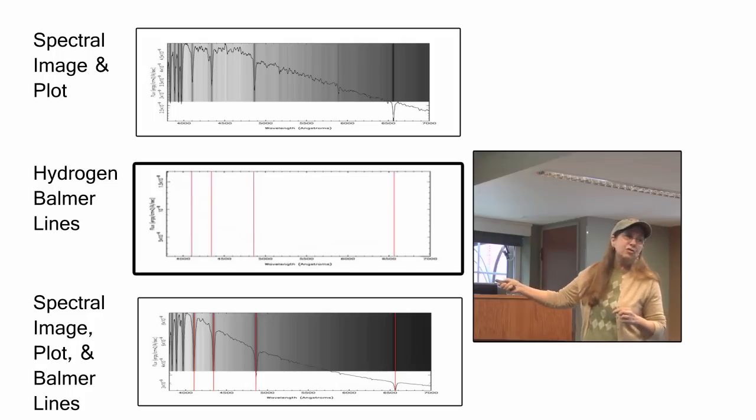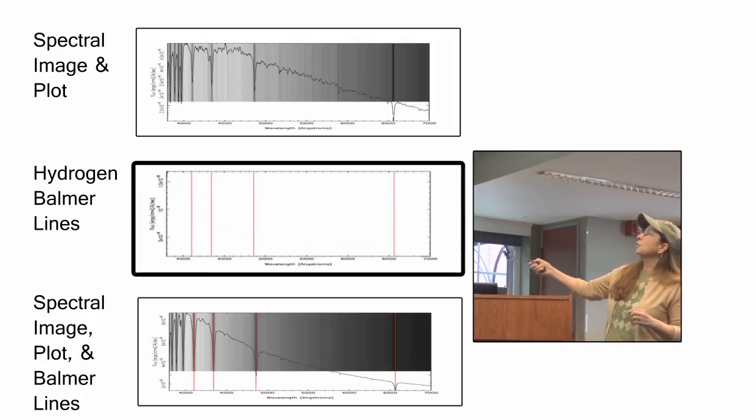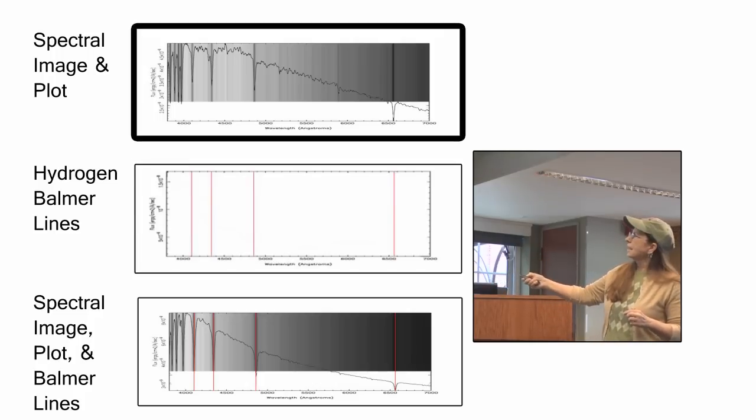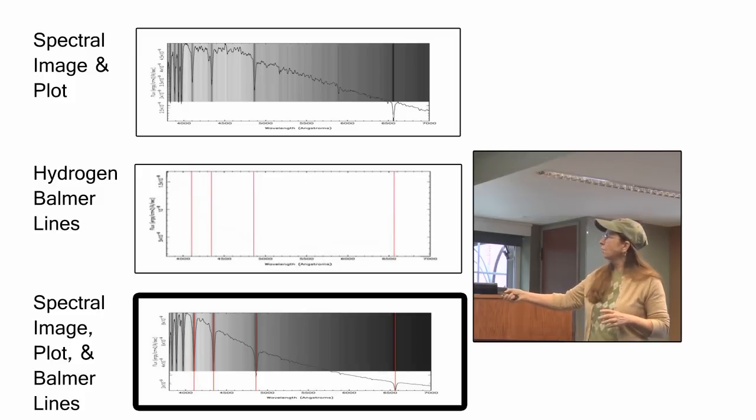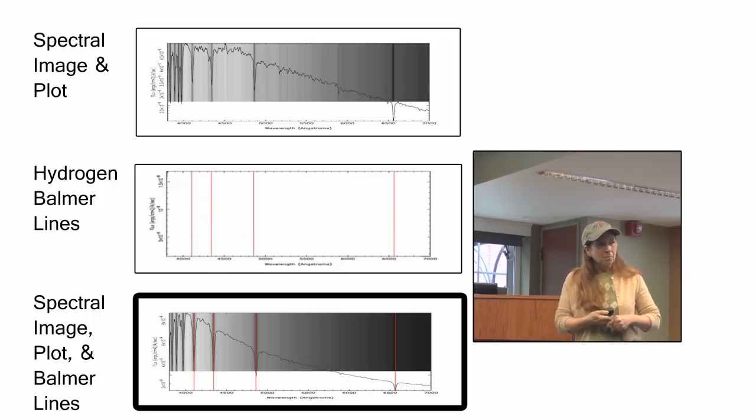Then you look at the hydrogen Balmer lines, take your spectral image and plot, and overlay the Balmer lines on it. You can see that this particular one has all four Balmer lines, and so that tells you the classification of star that is.